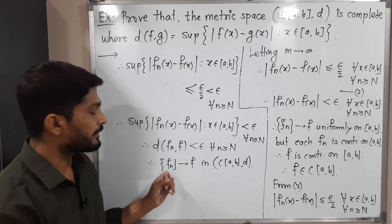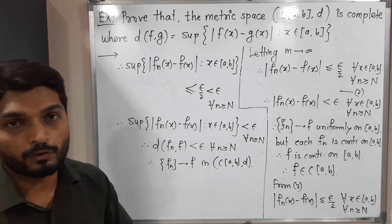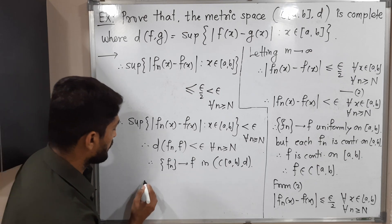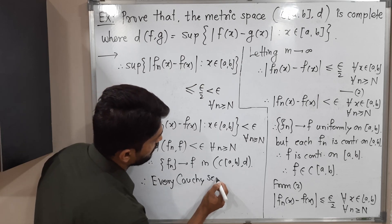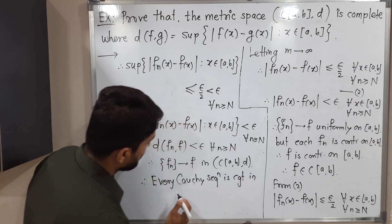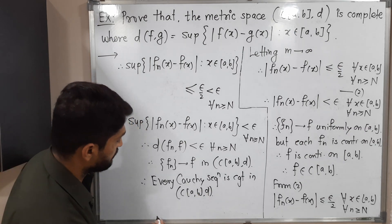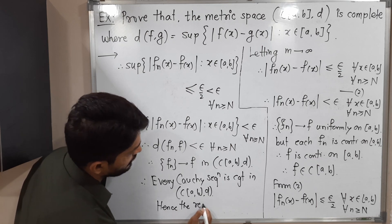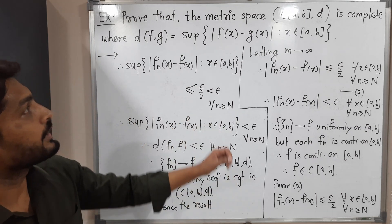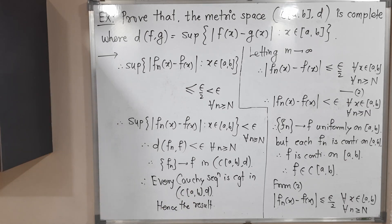We started with {f_n} as a Cauchy sequence in C([a,b], d) and proved it is convergent. Therefore, every Cauchy sequence is convergent in C([a,b], d). Hence, it is a complete metric space, since every Cauchy sequence is convergent. The solution is over. Thank you, see you in the next video.